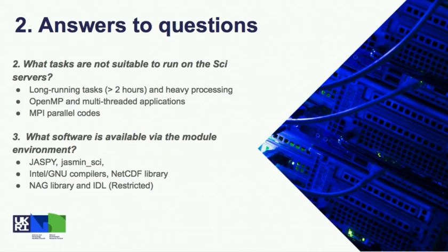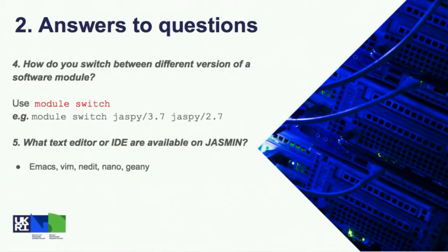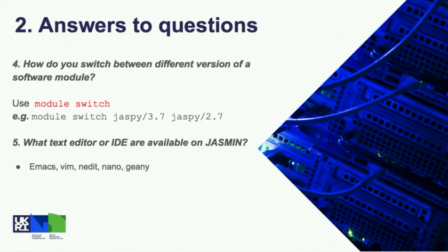The third question covered what software is available in the module system. Software is classified by JASB and JASMN environments — there are compilers, libraries like NetCDF, and other software like the NAG library and IDL, though some are restricted. To switch between different software versions, the command is 'module switch', which is useful now that we have different versions of JASB, allowing you to enable different Python environments or applications within a JASB environment, switching directly from one module or software version to another.